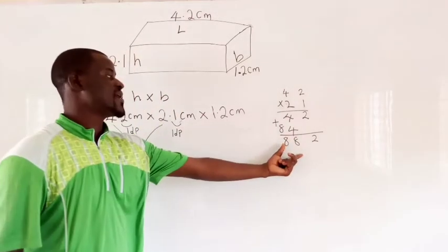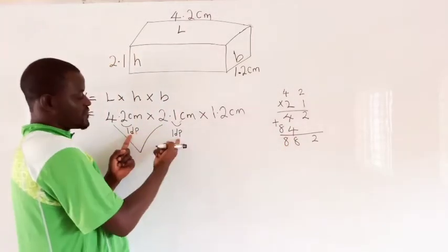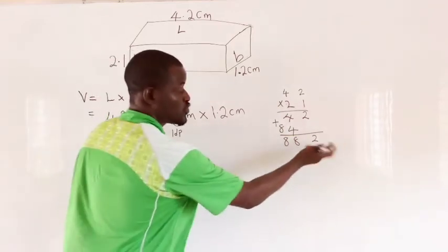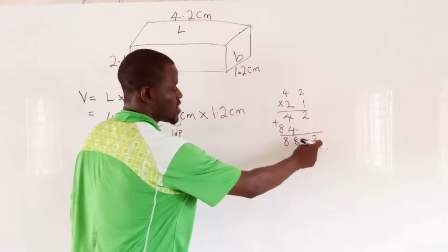So this is our answer. Remember, we are going to have 2 decimal places. So we count 2 numbers backward: 1, 2.